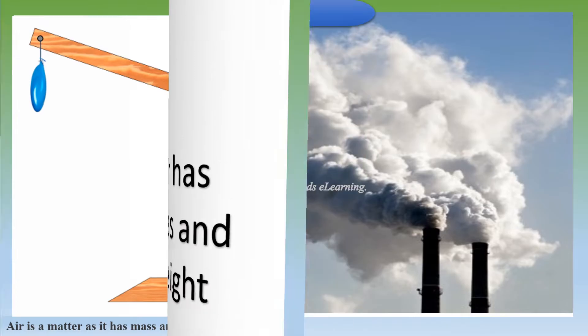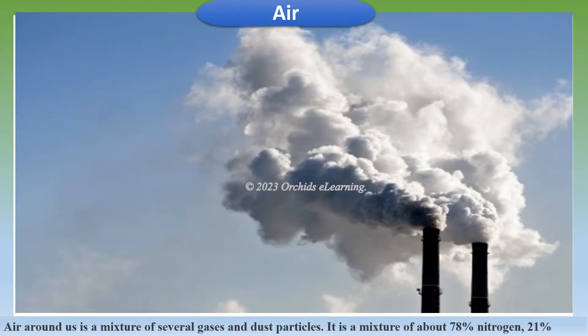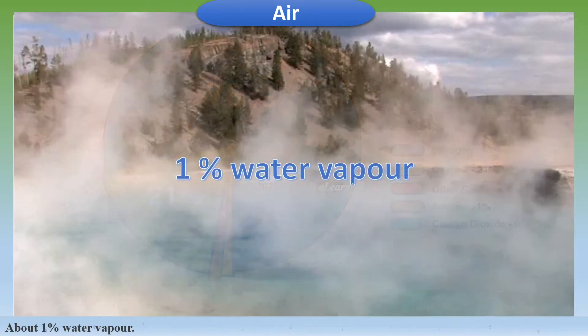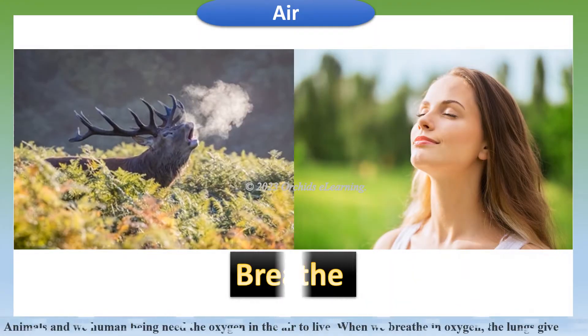Air around us is a mixture of several gases and dust particles. It is a mixture of about 78% nitrogen, 21% oxygen, 0.9% argon, 0.04% carbon dioxide, and very small amounts of other gases. There is an average of about 1% water vapor.